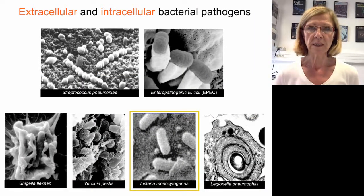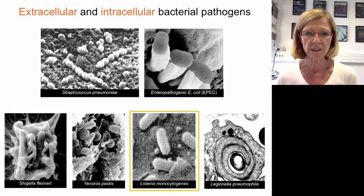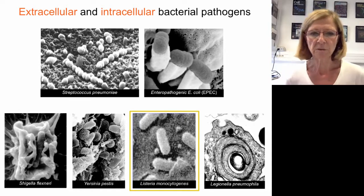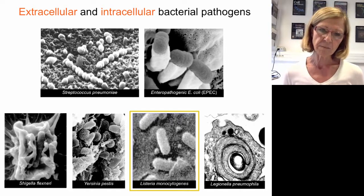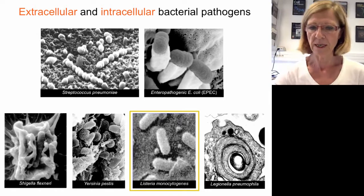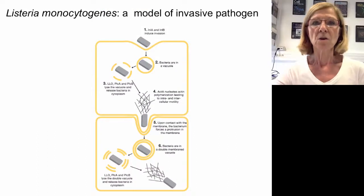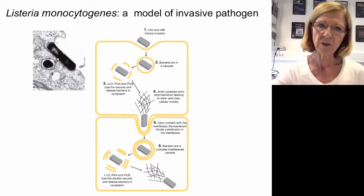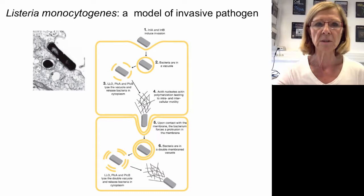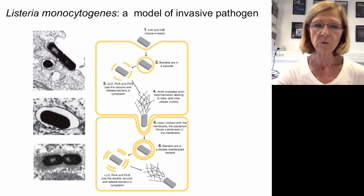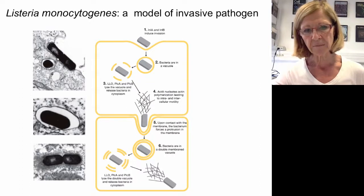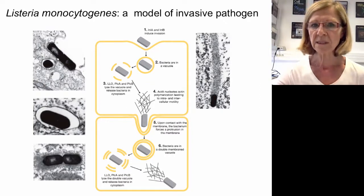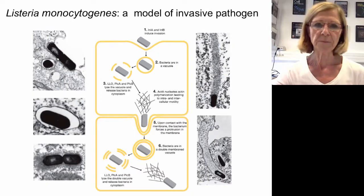When we started to work on Listeria in the late 80s, we chose it because it's an intracellular bacterial pathogen and we realized that intracellular pathogens are responsible for major health problems. Listeria monocytogenes is an invasive pathogen, meaning it is able to enter cells which are normally non-phagocytic. It first adheres, then is internalized in a vacuole, escapes from this vacuole, starts to replicate, recruits actin, and polymerizes actin so that it can move inside the cell and spread from one cell to another.